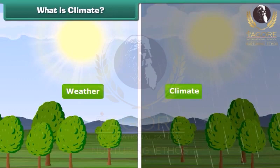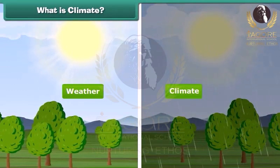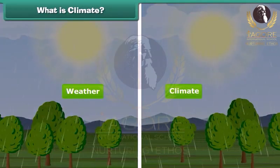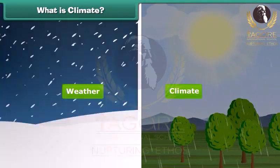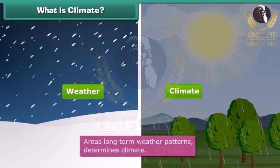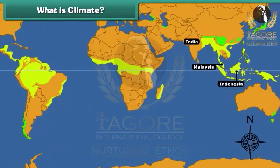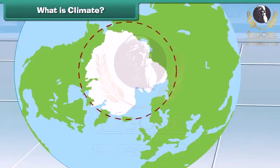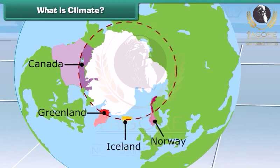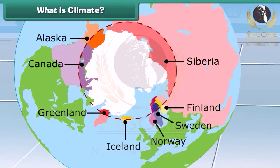Is weather and climate the same? No. An area's long-term weather patterns determine its climate. For example, areas near the equator have a warm climate and areas near the poles have a much colder climate. So children, now you can easily differentiate weather from climate.